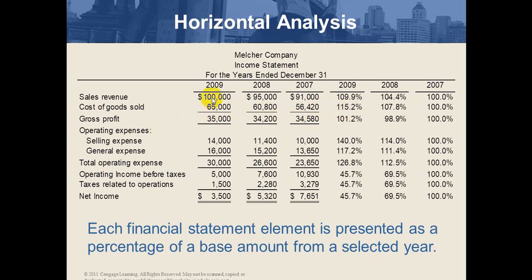For gross profit in 2009: 100,000 minus 65,000 equals 35,000. So 35,000 divided by 34,580 times 100 equals 101.2%. For selling expenses: 14,000 divided by 10,000 equals 140%. For general expenses: 16,000 divided by 13,650 equals 117.2%. Total operating expenses: 30,000 divided by 23,650 equals 126.8%.